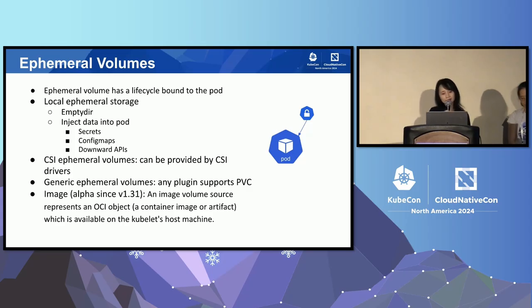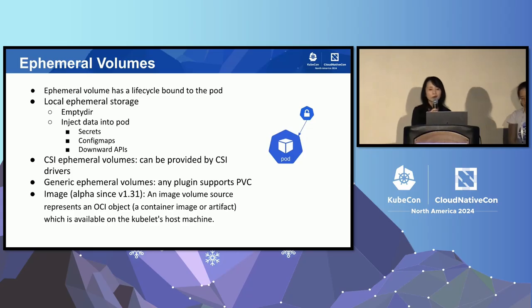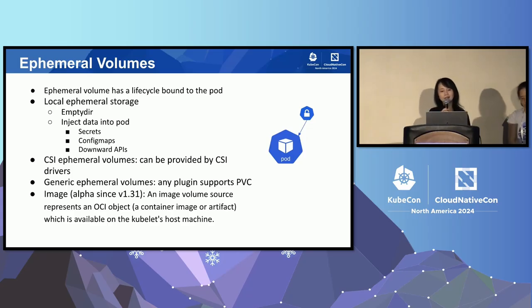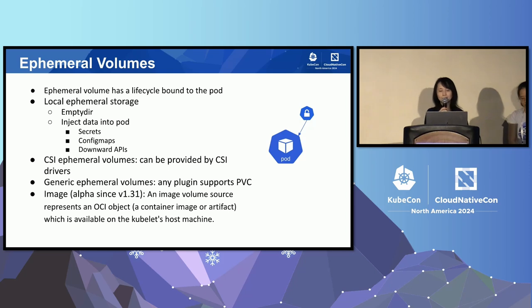And in the 1.31 release, there is a new volume type called image that allows a container image file or artifacts to be mounted into the pod.